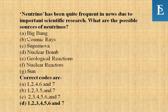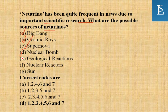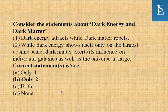Neutrinos have been quite frequent in the news due to important scientific research. The possible sources of neutrinos include: the Big Bang, cosmic rays, supernovae, nuclear bombs, geological reactions, nuclear reactors, and the Sun — all of them are sources. Statements one through seven are all correct.